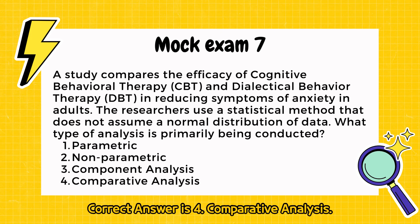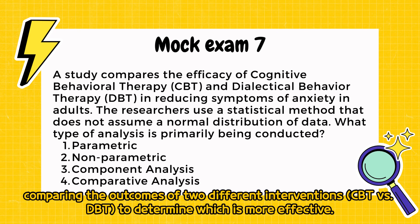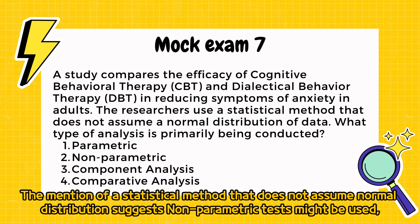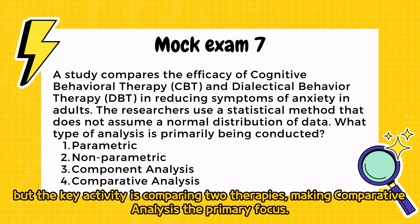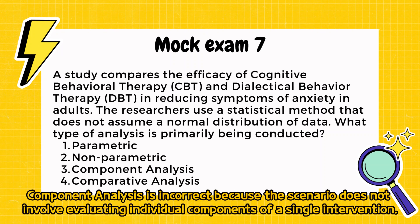Correct answer is 4: Comparative analysis. The study focuses on comparing the outcomes of two different interventions — CBT versus DBT — to determine which is more effective. The mention of a statistical method that does not assume normal distribution suggests non-parametric tests might be used, but the key activity is comparing two therapies, making comparative analysis the primary focus. Parametric is incorrect because it implies the data follows a normal distribution. Component analysis is incorrect because the scenario does not involve evaluating individual components of a single intervention.